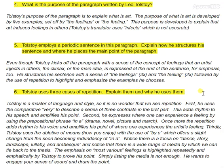Tolstoy uses three cases of repetition — there are others, but there are three main ones. Explain them and why he uses them. I would argue that Tolstoy is a master of language and style. He uses repetition first in the comparative 'very,' using it six times to describe a series of three contrasts in the first part. This adds rhythm to his speech and amplifies his point.